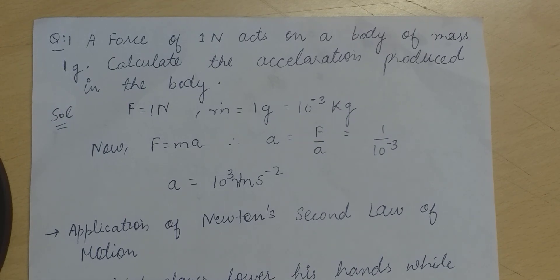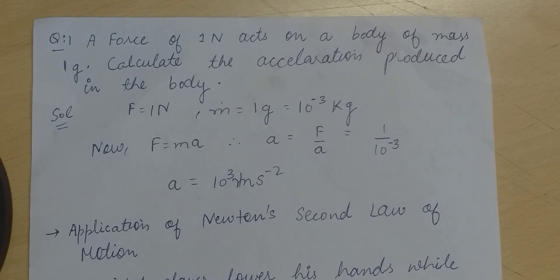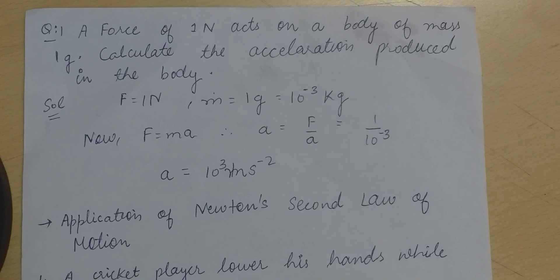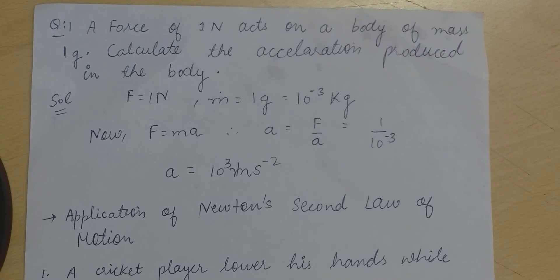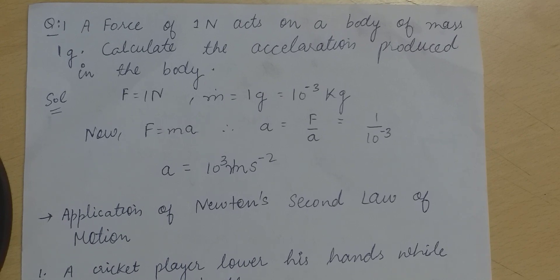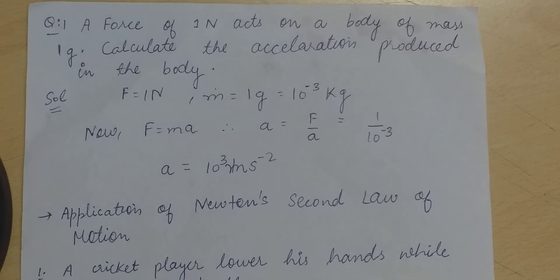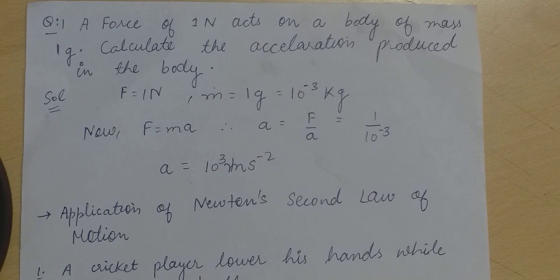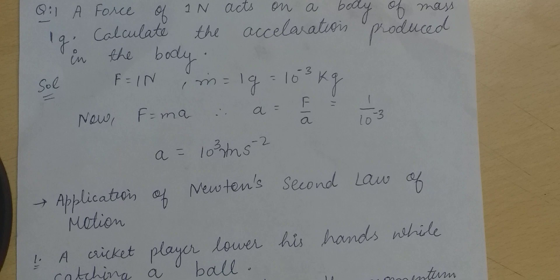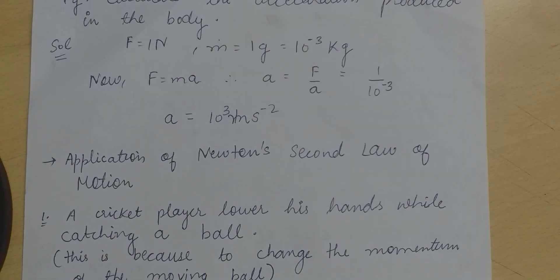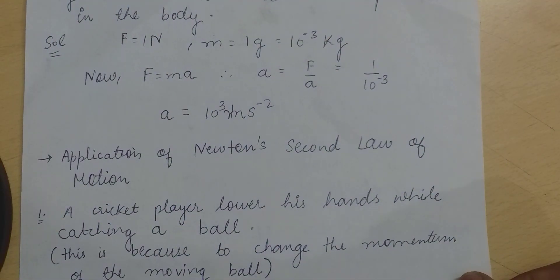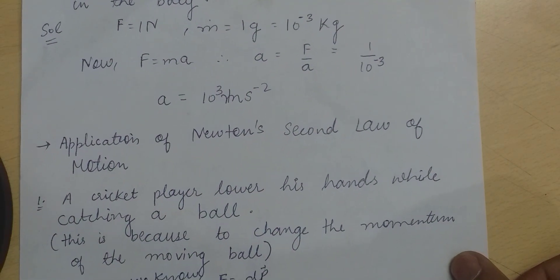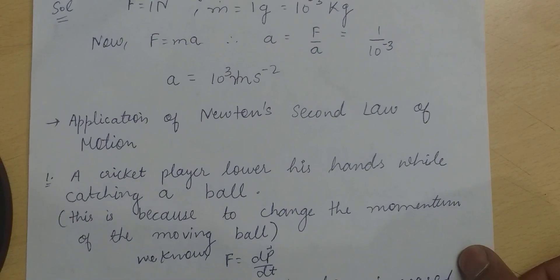A numerical is here: a force of one newton acts on a body of mass one gram, calculate the acceleration produced in the body. Force equal to one newton, mass equal to one gram, given mass can be written as 10^-3 kg. So we know F equal to ma, acceleration equal to F upon m, so one upon 10^-3, acceleration equal to 10^3 meter per second squared.